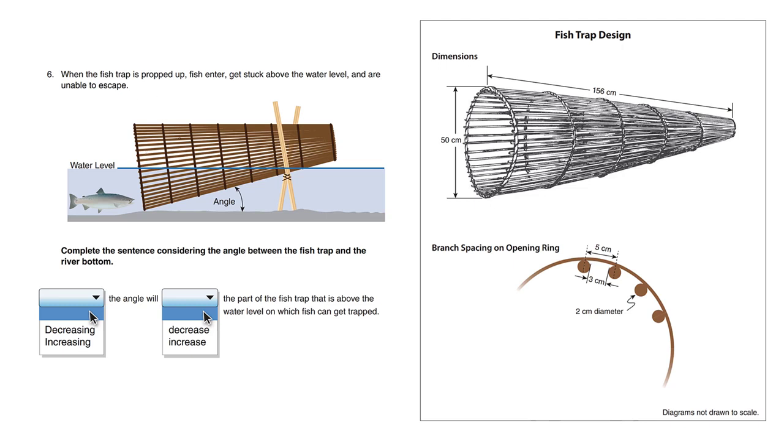When the fish trap is propped up, fish enter and get stuck above the water level. Fish going down current towards the right get stuck up here because the current pushes them in and they can't escape. Complete the sentence considering the angle between the fish trap and the river bottom.